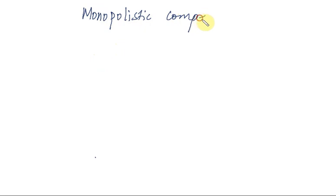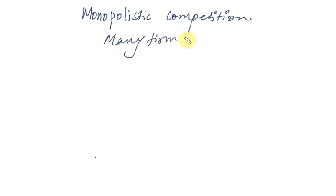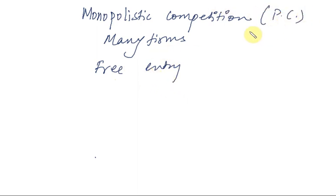Let us start with the first concept of this chapter, which is monopolistic competition. In monopolistic competition, we have many firms, and all these firms have free entry and free exit, which is why monopolistic competition is very much like perfect competition.